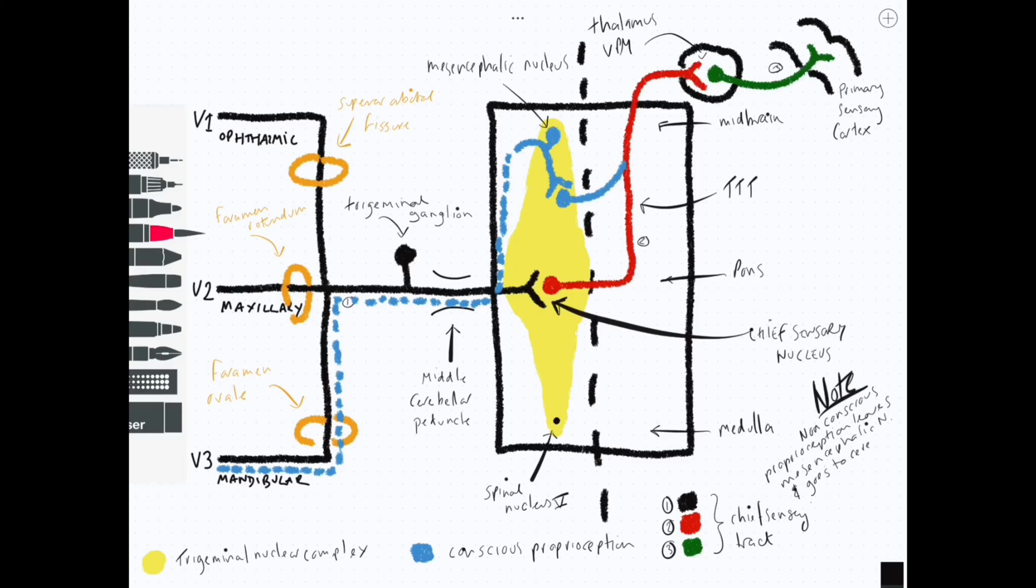It then synapses shortly afterwards to send proprioceptive information off towards the TTT, and it joins the TTT to that second-order neuron. But we must also remember that it also communicates with the motor nucleus of trigeminal and with the ipsilateral cerebellum, carrying non-conscious proprioceptive information.